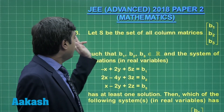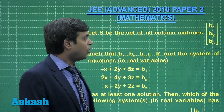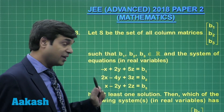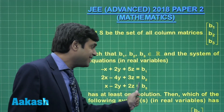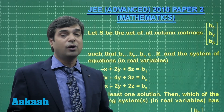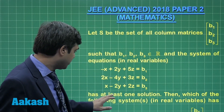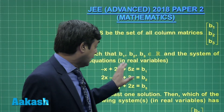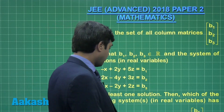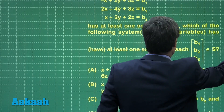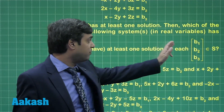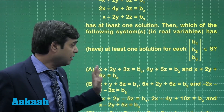Let us consider question number 3. Let S be the set of all column matrices b1, b2, b3, and the system of 3 equations has at least one solution — meaning either a unique solution or infinitely many solutions. Then which of the following systems has at least one solution for each b1, b2, b3? Four systems of equations are given.